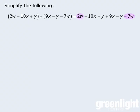To simplify, we can first combine 2w and -7w to get -5w. Next, -10x + 9x simplifies to -1x, or -x.